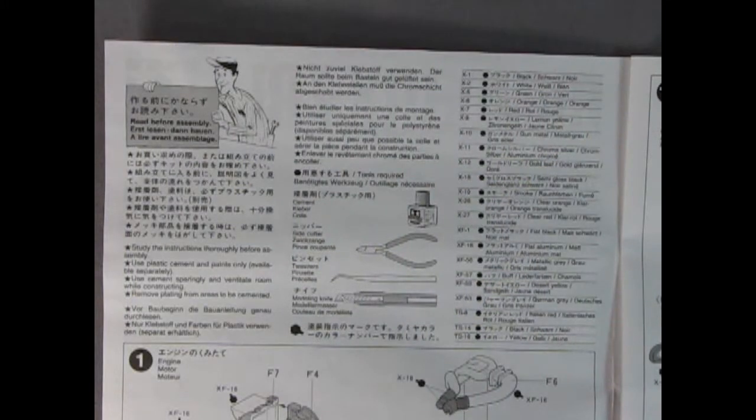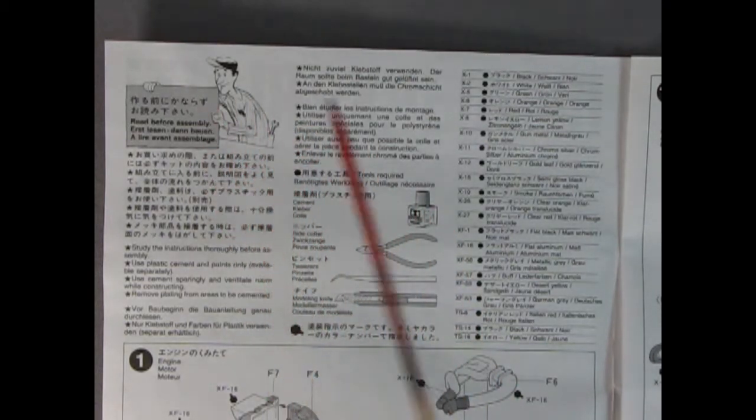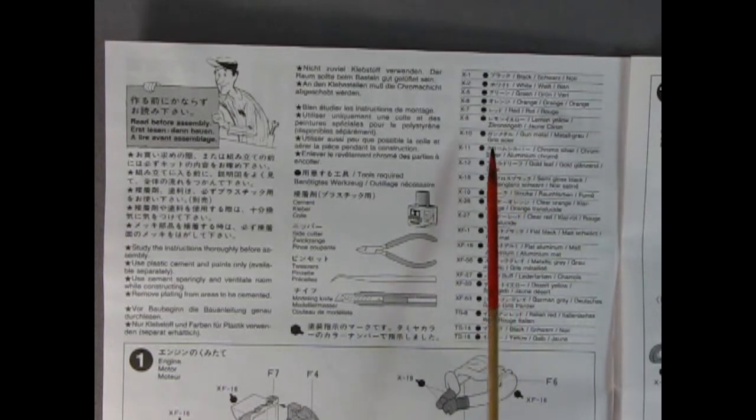Now I always liked this section of the instruction sheet. This is the how to build a model. In the Japanese models they always have this guy holding the sign here, and then they show you the types of glue to use. And then all your paint colors down here. These match the Tamiya paints.